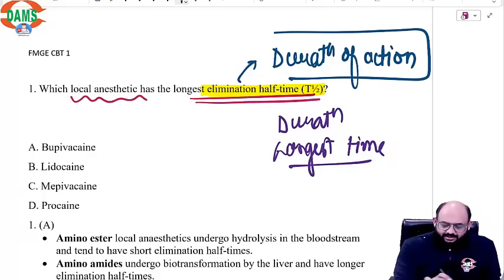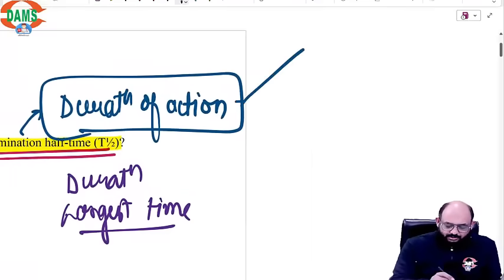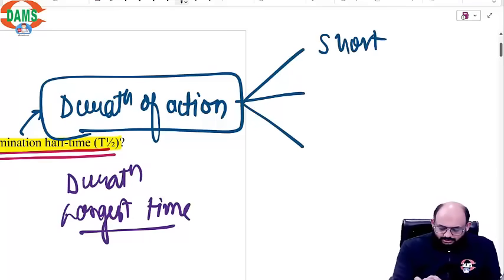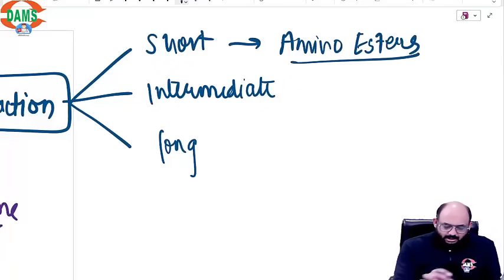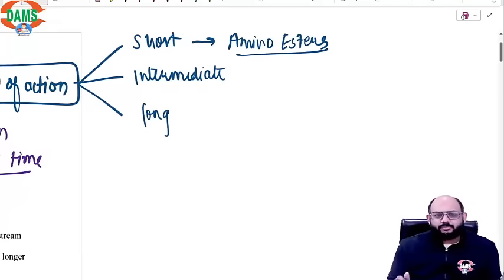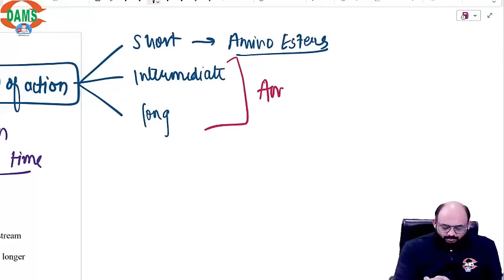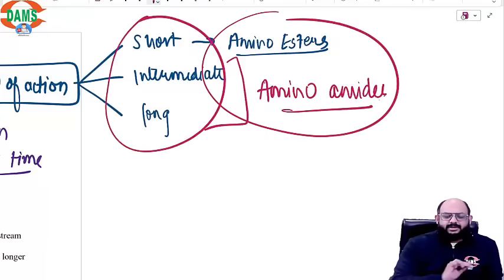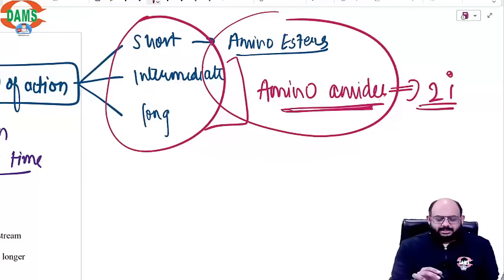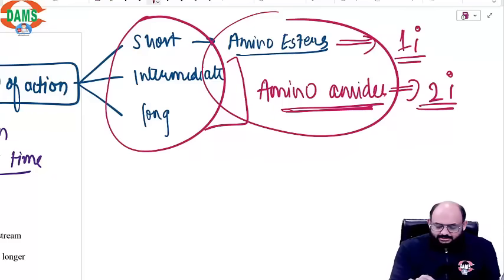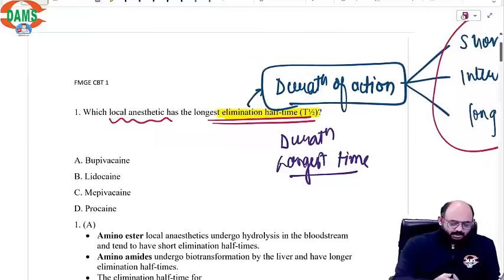We have divided local anesthetics based on their duration of action into three types: short, intermediate, and long. Short ones are amino esters, because amino esters are metabolized by plasma pseudocholinesterase, which is a plasma-based enzyme. Their metabolism is faster and therefore their duration of action is shorter, while intermediate and long are amino amides. Even if you don't remember this classification, you can identify amino amides: all local anesthetics with two 'i's in their spelling are amino amides, as compared to amino esters which have one 'i' in the spelling.